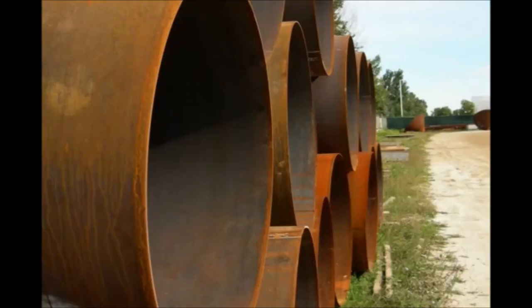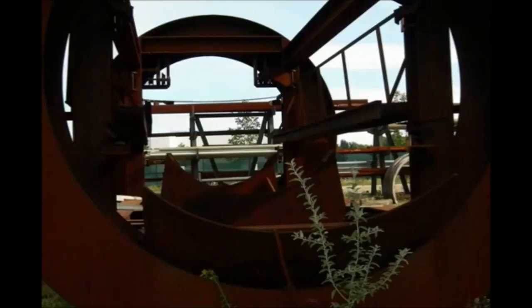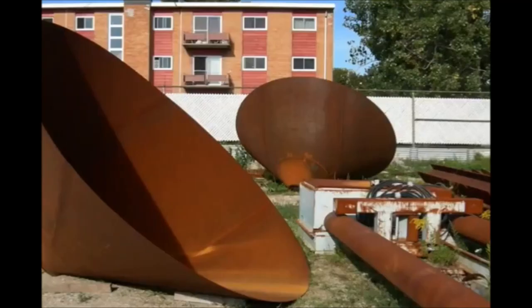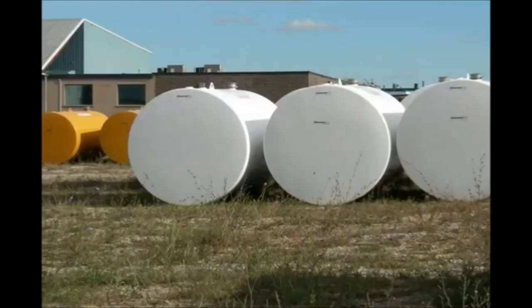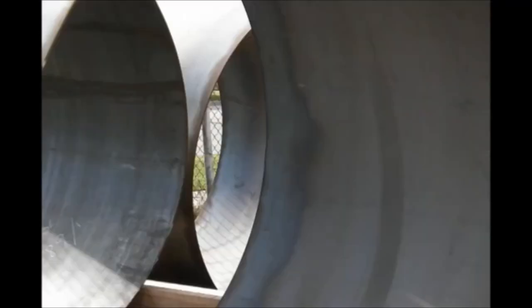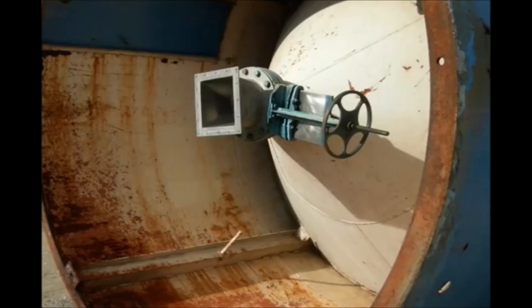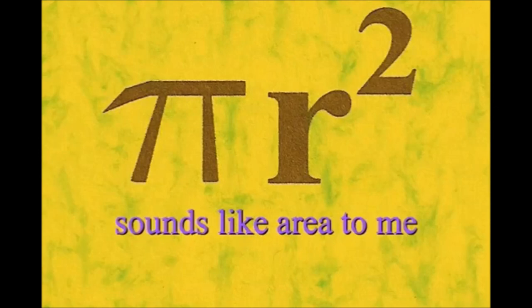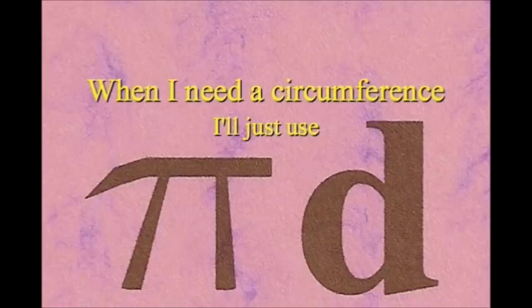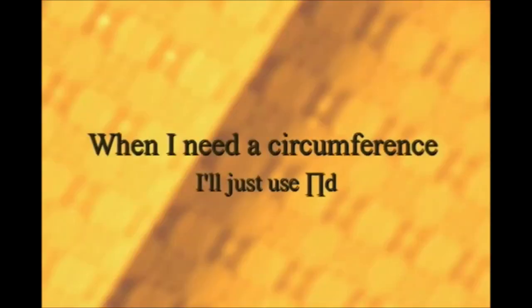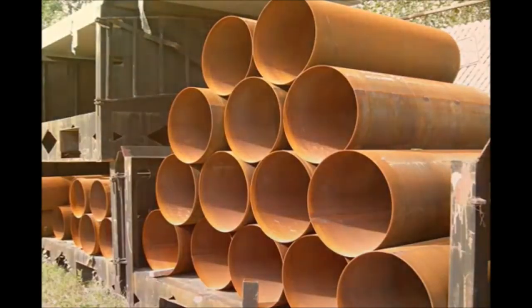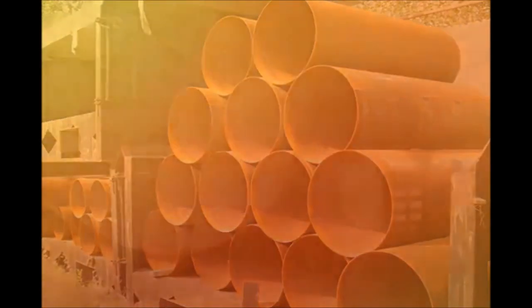Here is a circle, it knows how to get around. It has a radius from center to rim. And its diameter's a line that goes from side to side while passing through the center, now isn't that simple. Pi r squared sounds like area to me, when I need a circumference, I'll just use pi d.